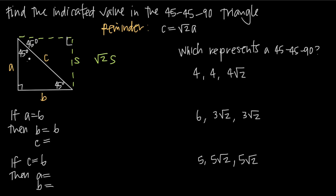The angle opposite side B is also 45 degrees, and as we know with an isosceles triangle when we have opposite sides that are equal, the angles opposite those sides are also going to be equal — 45 degrees and 45 degrees. So that's another special thing about a 45-45-90 triangle: it is an isosceles triangle and we can use the isosceles triangle theorem. So we know A equals 6 and B equals 6. C is the hypotenuse, and because this is a right triangle, we can use the Pythagorean theorem — A squared plus B squared equals C squared.